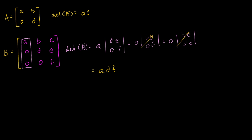Notice the determinant of the 2×2 matrix was just A times D, and the determinant of the 3×3 was ADF. In both cases we had 0s below the main diagonal, and the determinant ended up being the product of the entries along the main diagonal. If you think that's a general trend that always applies, you are correct — we can prove it in the general case.